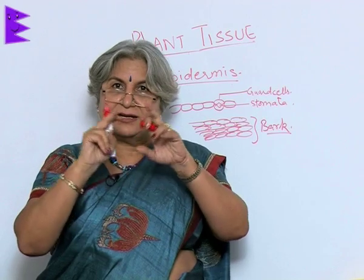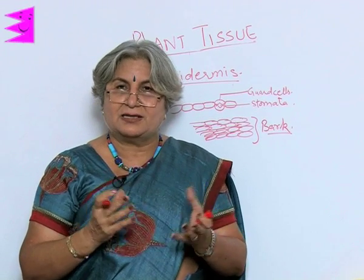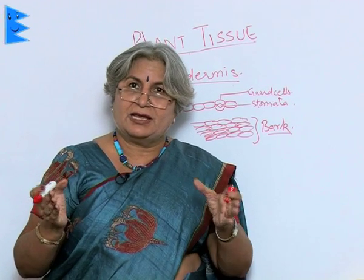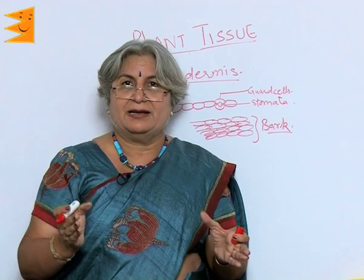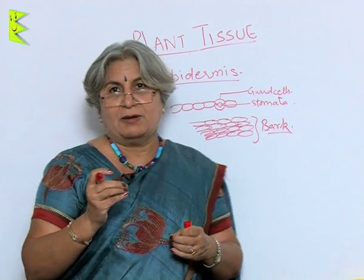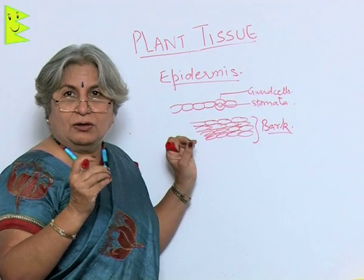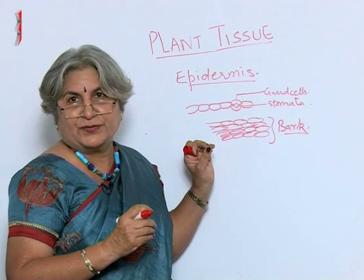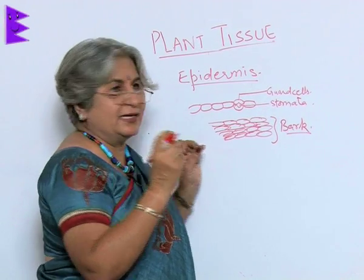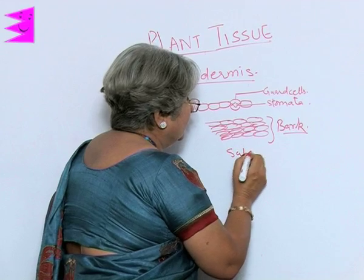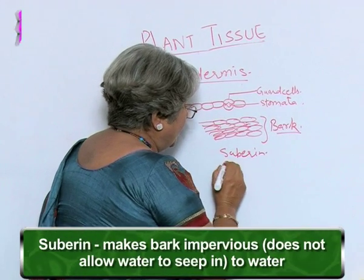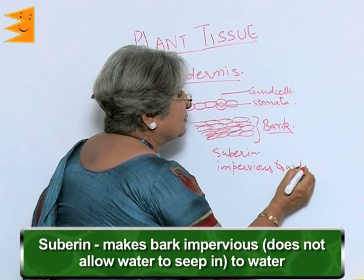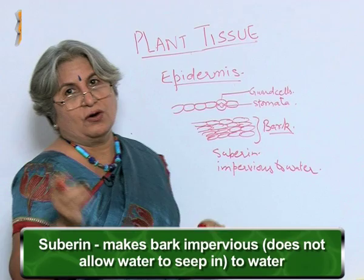So here there is not a single epidermis as in the case of tender or young parts — the older parts require more protection, so even the epidermis is replaced by the many-layered bark. This bark has to protect the inner tissue from water and other variables, and it contains a substance called suberin, which makes it impervious to water — meaning it does not allow water to seep in.